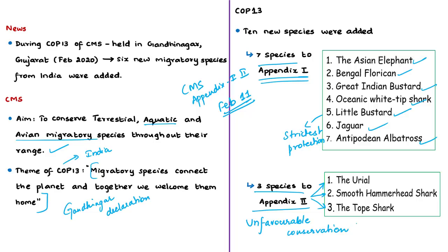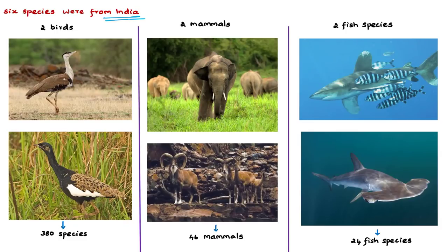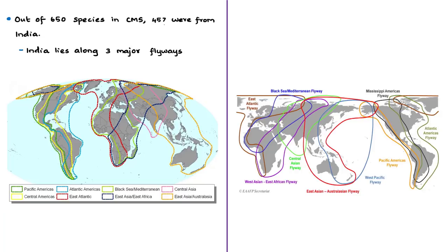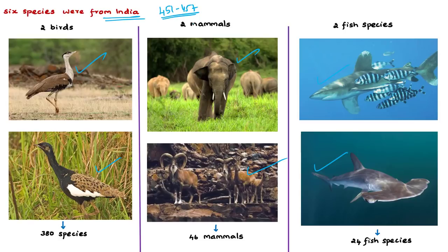Among these 10 species, 6 migratory species were added from India: Asian elephant, Great Indian bustard, Bengal florican, oceanic whitetip shark, Uriel, and smooth hammerhead shark. With this addition, the total number of migratory species from India has increased from 451 to 457. The CMS appendices have around 650 migratory species in total, and 457 are from India itself, showing India plays a very important role in conservation.